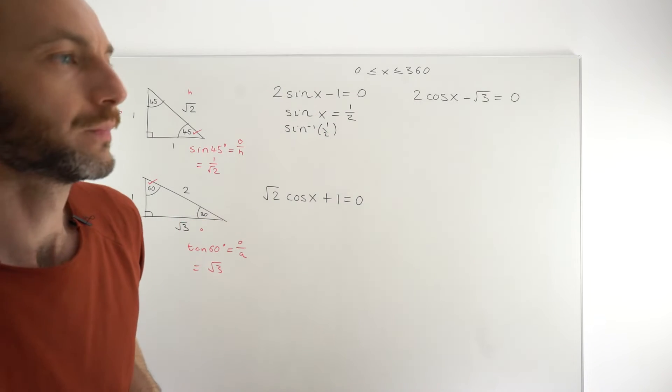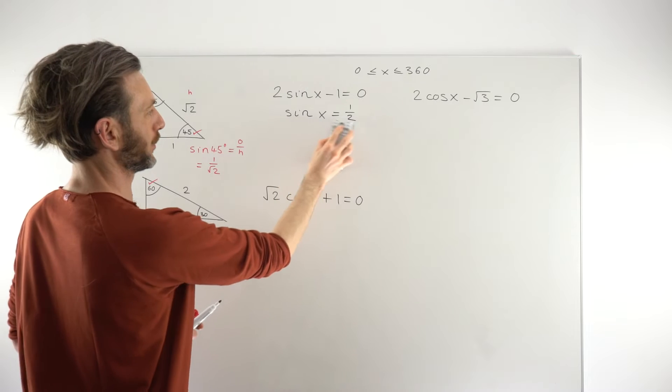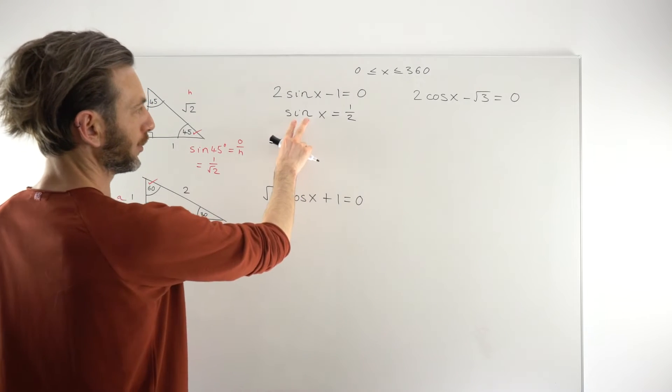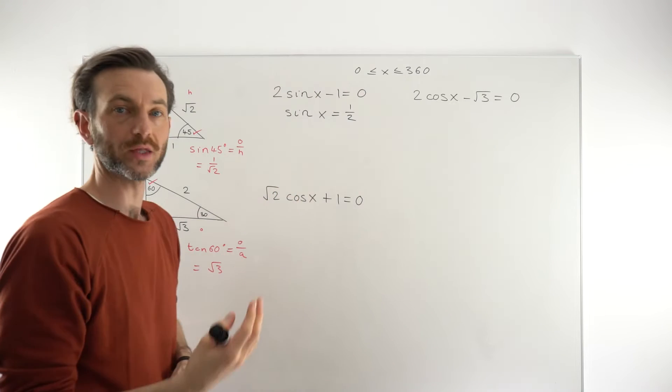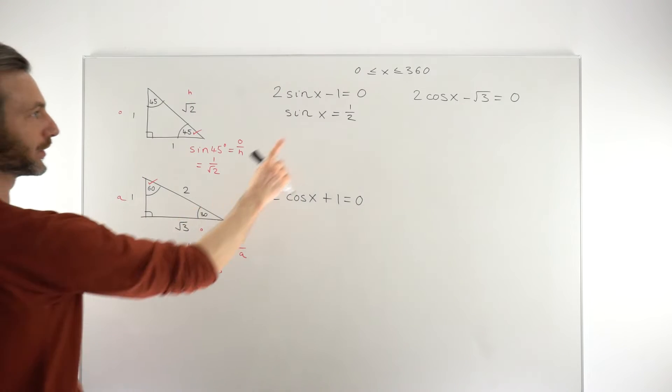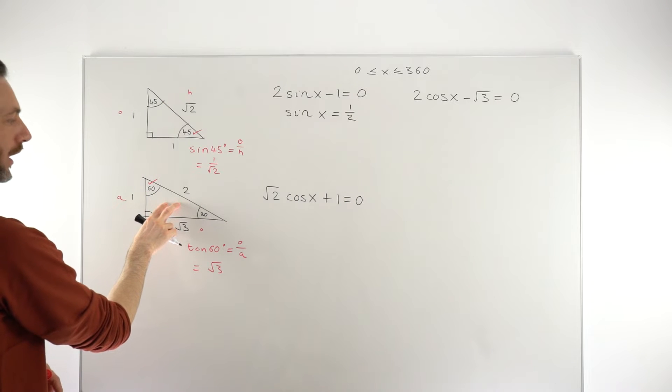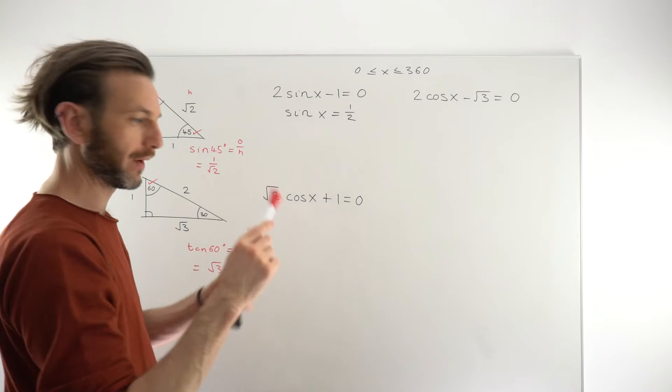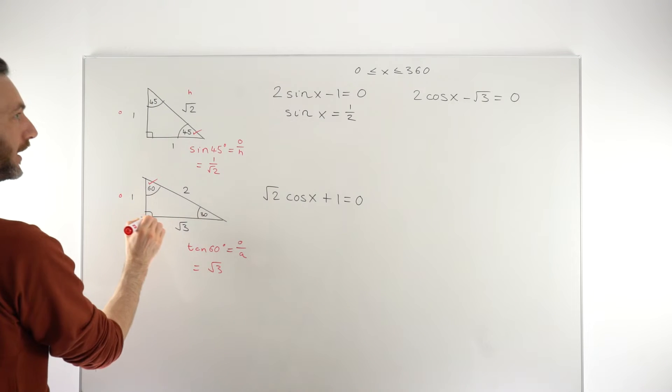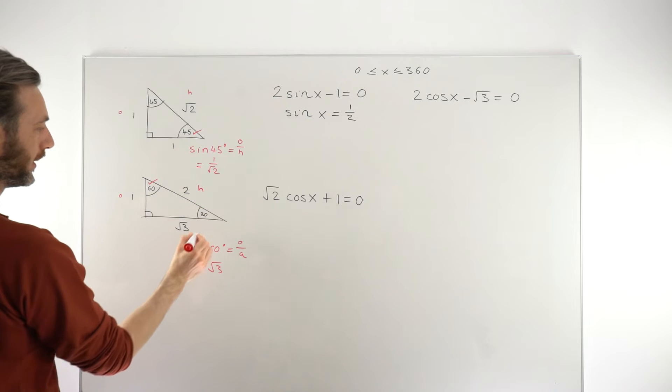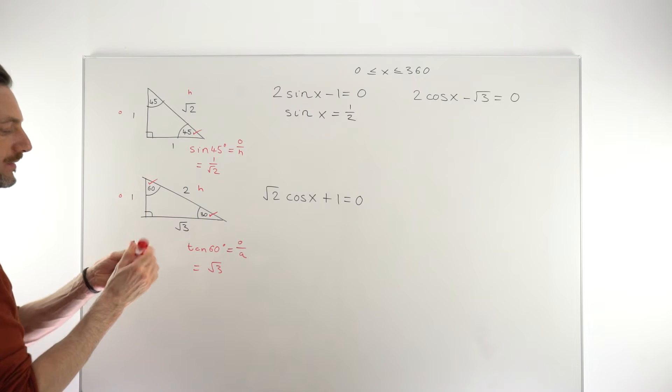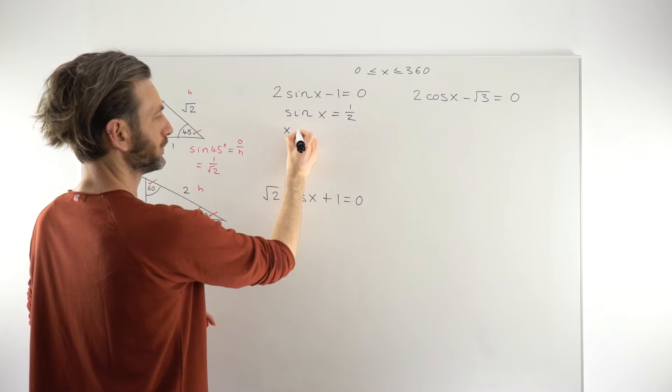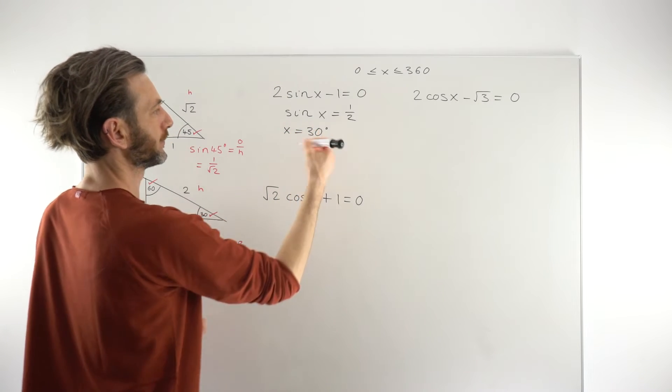And then we would get some value from the calculator. We're going to have to figure out what that calculator value would be manually. So, what we do is we think, okay, sine is opposite over hypotenuse in SOHCAHTOA. We turn to the triangle that's got the 1 and the 2 in it, which is this triangle, and we say, if we want the 1 to be opposite and the 2 to be hypotenuse, then that would mean that 30 is the angle we're interested in. So, that process then tells us that the x value is going to be 30 degrees for our first solution.